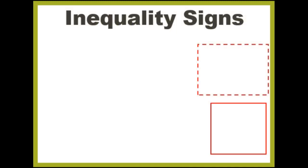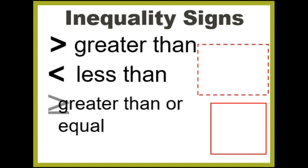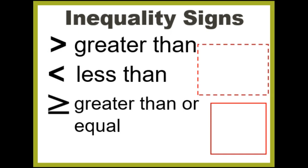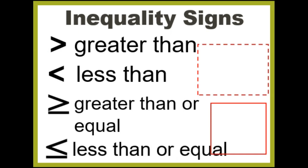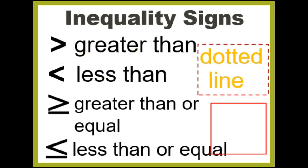Let's have a quick recap about inequality signs. We have greater than, less than, greater than or equal, and less than or equal. If the inequality symbol is greater than or less than, then draw a dotted line. If the inequality symbol is greater than or equal, or less than or equal, then draw a solid line.